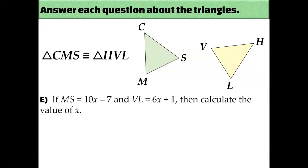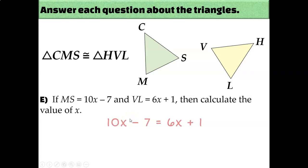Sometimes you'll have to use algebra to figure out this kind of problem. For example, if MS equals 10x minus 7 and VL equals 6x plus 1, we can calculate the value of x because M and S are the last two letters and V and L are the last two letters — these are corresponding sides of congruent triangles, so I can set them equal to each other and solve. The answer ends up being x equals 2.